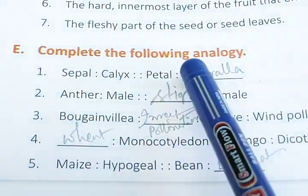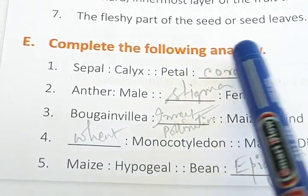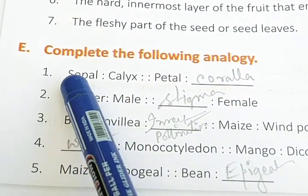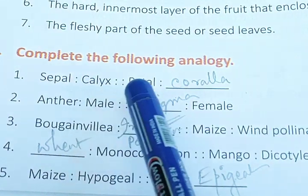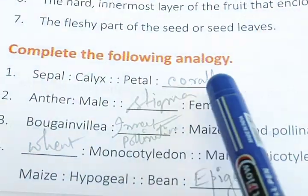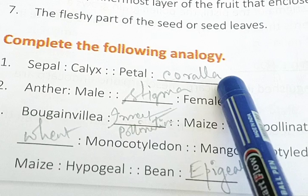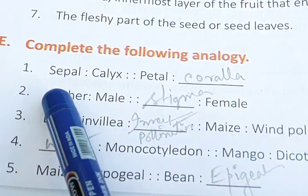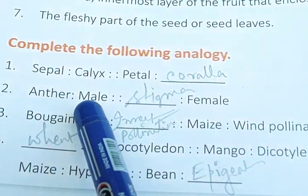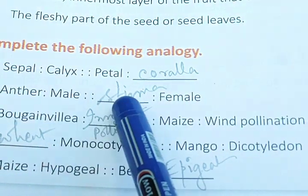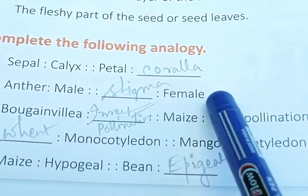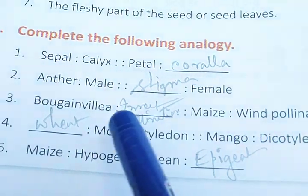Complete the following analogy: sepals is to calyx as petals is to corolla. Anther contains male gametes as stigma is to female gametes.